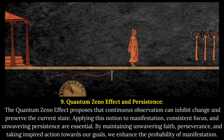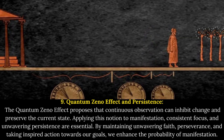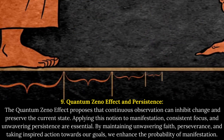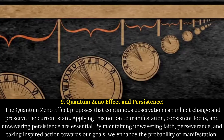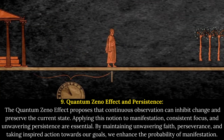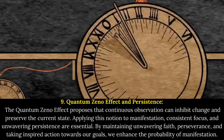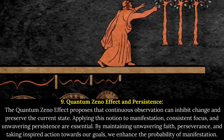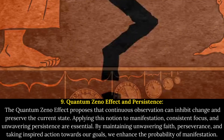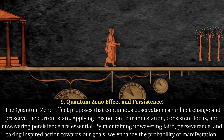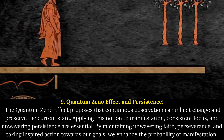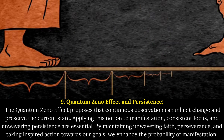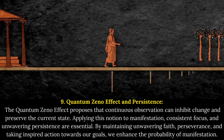Quantum Zeno Effect and Persistence. The Quantum Zeno Effect proposes that continuous observation can inhibit change and preserve the current state. Applying this notion to manifestation, consistent focus and unwavering persistence are essential. By maintaining unwavering faith, perseverance, and taking inspired action towards our goals, we enhance the probability of manifestation.